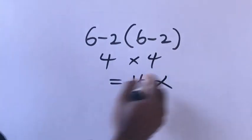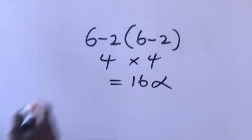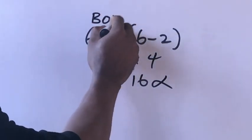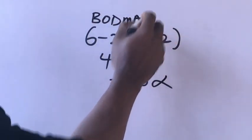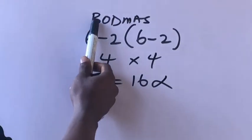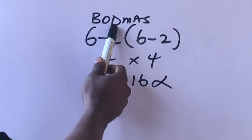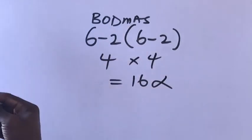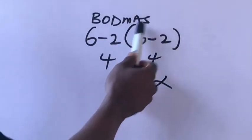But this answer is not correct according to order of operations. We have to first of all solve for parenthesis, bracket, division, M stands for multiplication, A stands for addition, and S stands for subtraction.